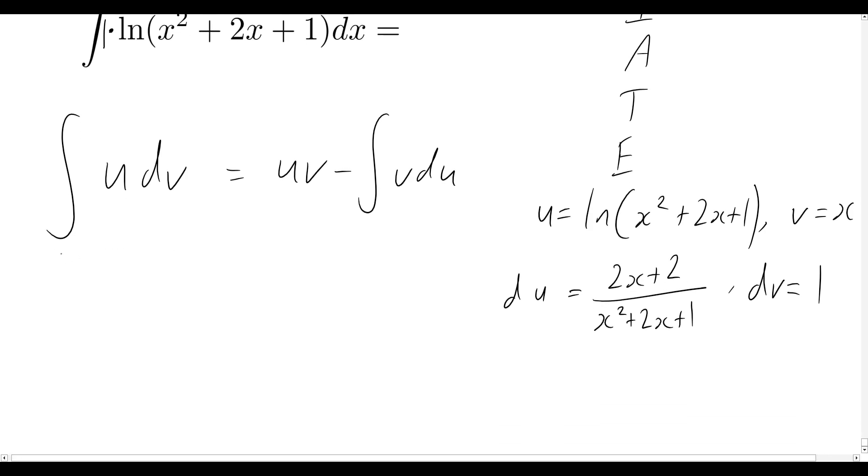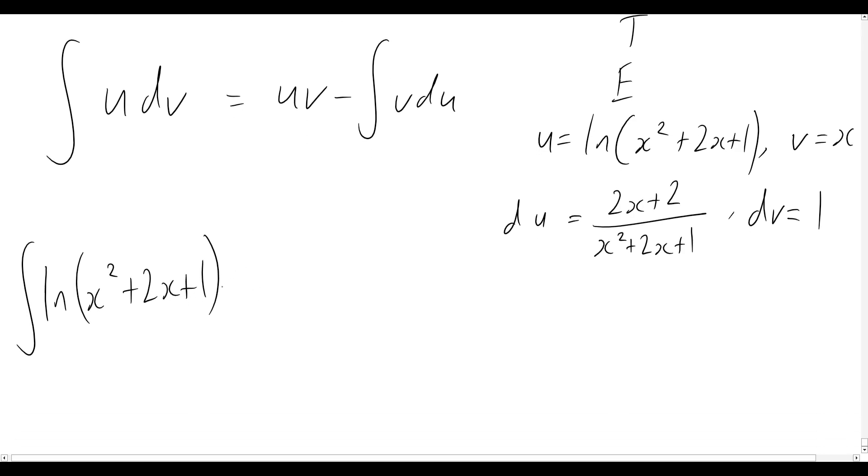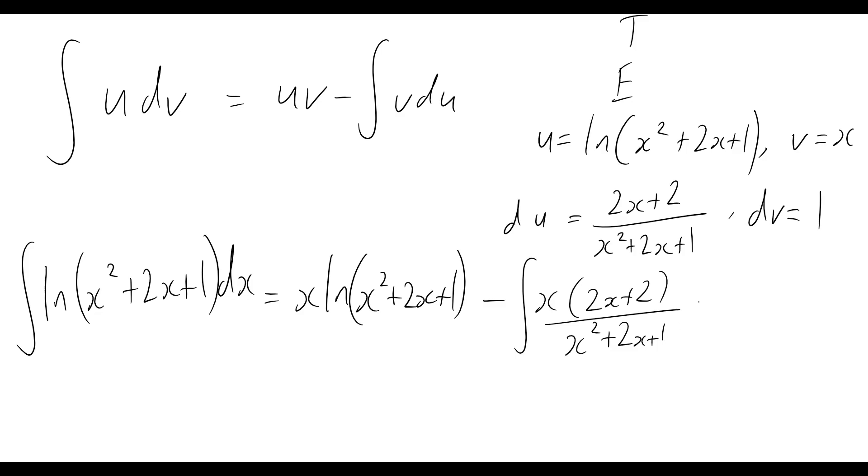So let's see what we get now. So we'll say that the integral of the natural log of x squared plus 2x plus 1 dx is going to be equal to uv. So I might put the v out the front here, just that way it's going to be x times the natural log of x squared plus 2x plus 1. And then we'll have minus the integral of v du. So v we know is x and du we know is written just above here as 2x plus 2 all divided through by x squared plus 2x plus 1 dx.